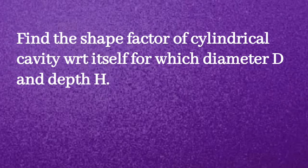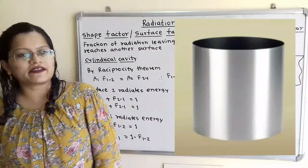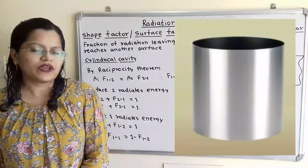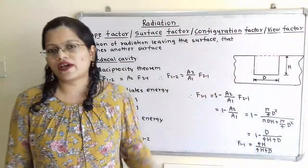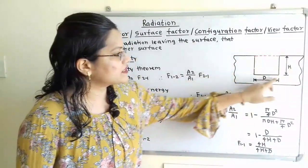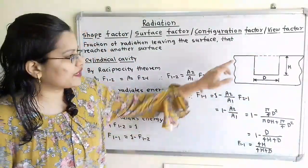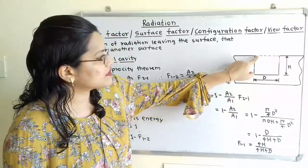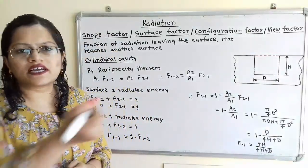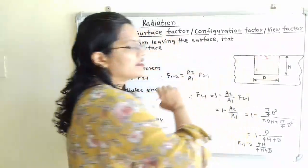The second problem: find the shape factor for a cylindrical cavity with respect to itself, where the diameter is D and the depth is H. We understand the cylindrical cavity using a diagram showing a cross-section with diameter D and depth H. We develop an imaginary surface to enclose the cylindrical cavity — the cavity surface is surface 1, and the imaginary closing surface is surface 2.